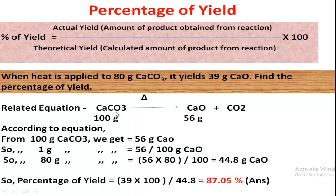The related equation: calcium carbonate, on applying heat, produces calcium oxide and carbon dioxide. This is already a balanced equation. The molecular mass of calcium carbonate is 100 grams and calcium oxide is 56 grams. From 100 grams of CaCO₃ we get 56 grams of CaO, so from 80 grams of CaCO₃ we get 44.8 grams of CaO — this is the theoretical yield. Percentage of yield = (39 ÷ 44.8) × 100 = 87.05%.